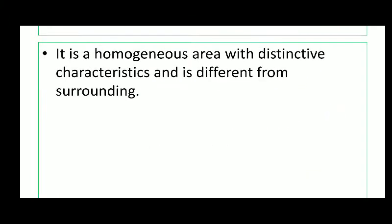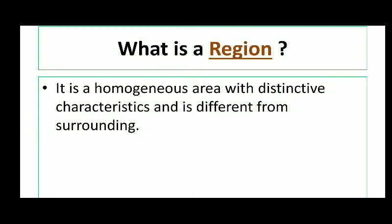Let's first understand what is the meaning of region. Before going to the deep concepts of region, let's understand that different landscapes have different types of nature and they possess different types of characteristics. For example, the landscape of a hill region or the characteristics of a hill region is completely different from the characteristics or attributes of a plateau region. So in this region there are completely different characteristics, and the characteristics should be homogeneous in that particular region.